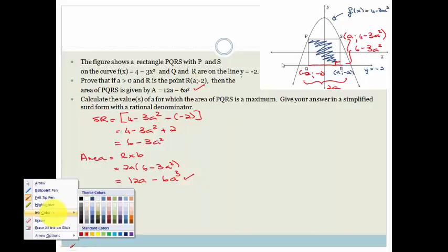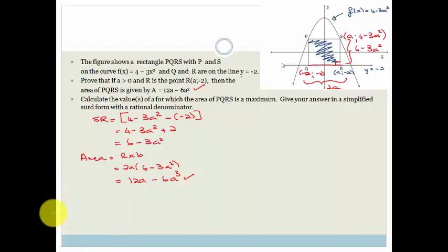Now I'm going to change color before we carry on to the next question. Now it says, calculate the value or values of A for which the area of PQRS is a maximum. And it says, give your answers in the simplified third form with a rational denominator.